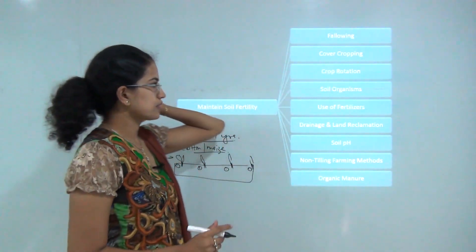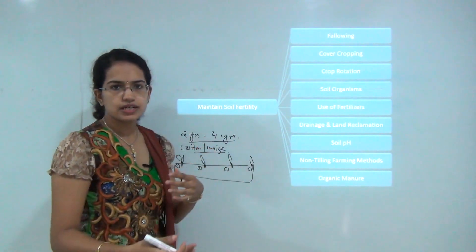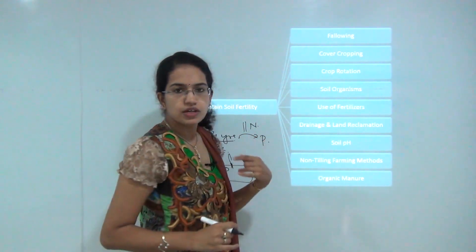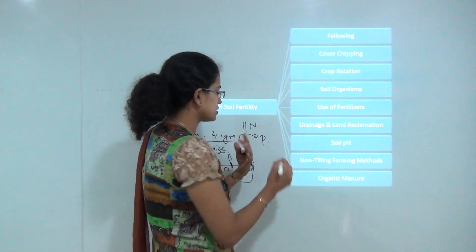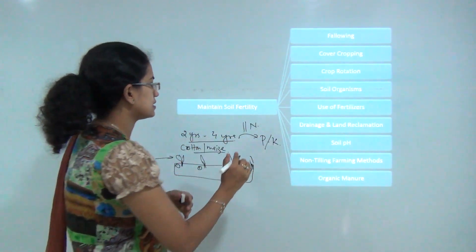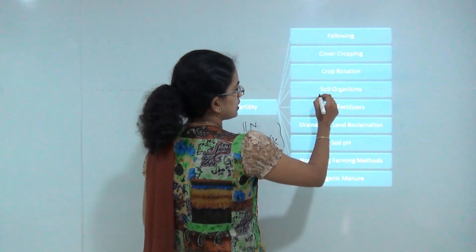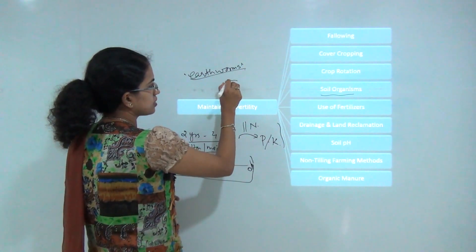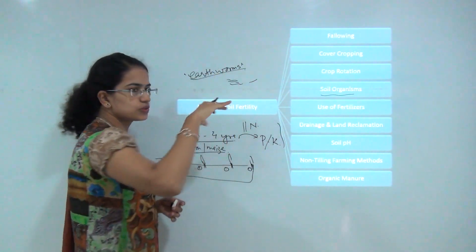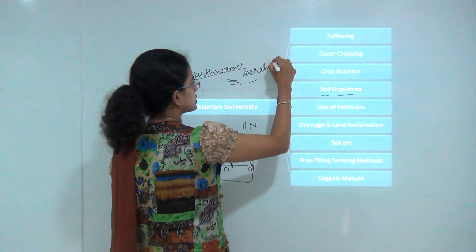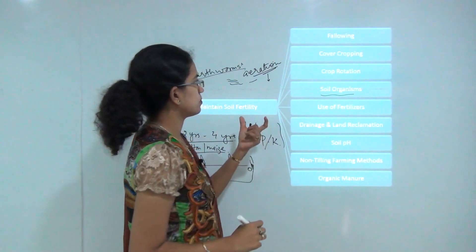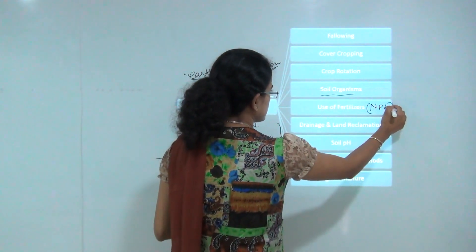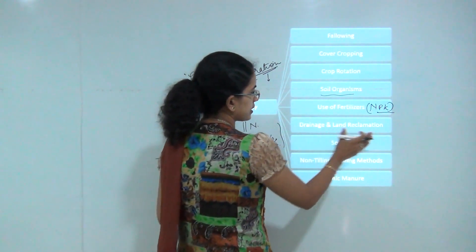Crop rotation means rotating crops one by another to maintain soil fertility. If one crop requires a lot of nitrogen fertilizer and the next requires potassium or phosphorus, you can interchange those crops to help regain soil fertility. Soil organisms like earthworms — known as a farmer's friend — create pores within the soil, increasing aeration and promoting soil fertility. Other methods include the balanced use of fertilizers or use of organic fertilizers, and drainage and land reclamation.